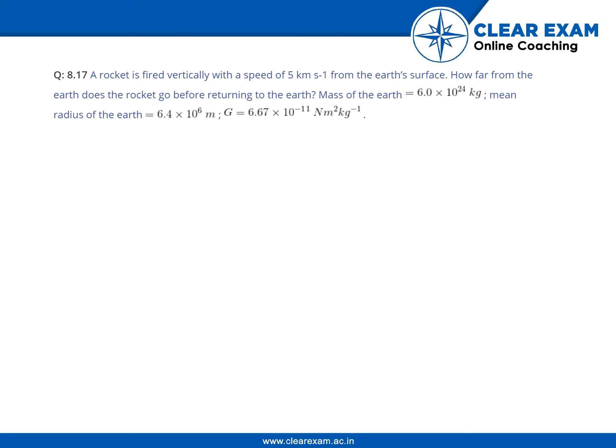The question given here is: a rocket is fired vertically with a speed of 5 kilometers per second from the Earth's surface. How far from the Earth does the rocket go before returning to Earth?